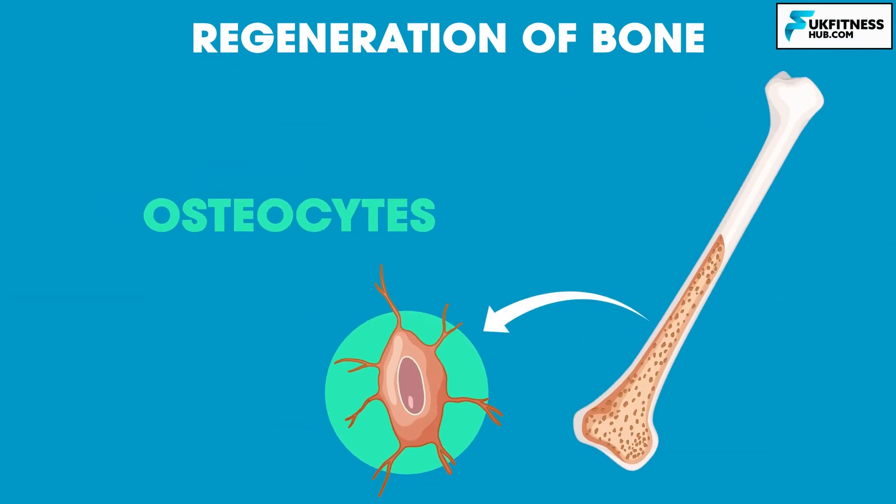Finally we have osteocytes. Once new bone has been built by osteoblasts, the osteoblasts trap themselves within the new bone they've made and become osteocytes. Osteocytes function to send messages to other cells about the state of bone, so areas of bone repair or growth can be identified.